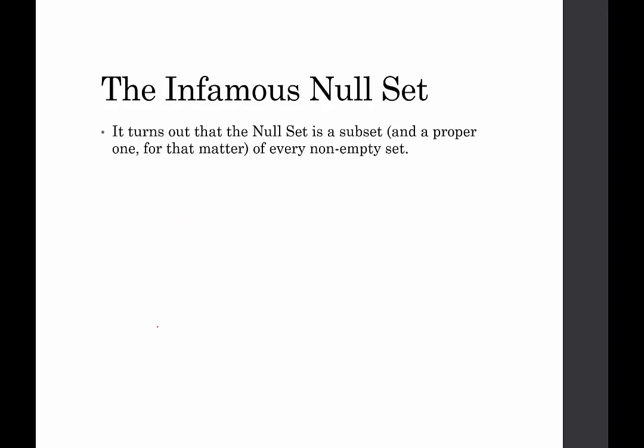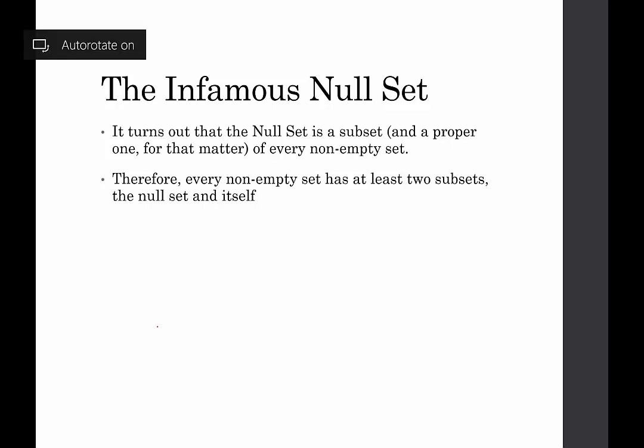A little bit more about that null set. The null set is a subset and a proper one of every non-empty set. So the only set that the null set is not a proper subset of would be the null set itself. That's getting a little bit trippy and a little bit too much, so we're not going to worry about that one. But anything that has an element in it, the null set is a subset. So therefore, any non-empty set contains at least two subsets, the null set and the set itself. And we're going to talk about finding subsets and the number of subsets in the next video. But this was just to introduce us to the idea that the null set does exist, and it is a proper subset of every non-empty set.